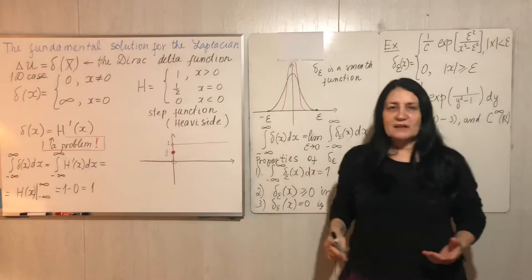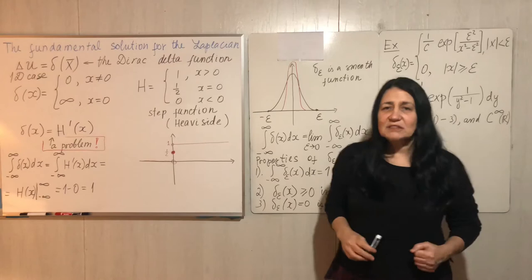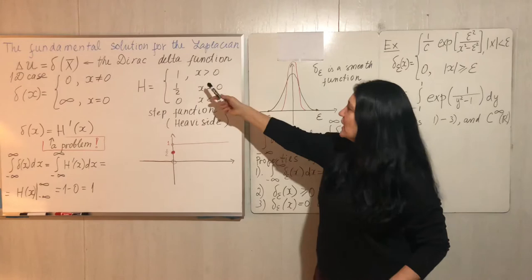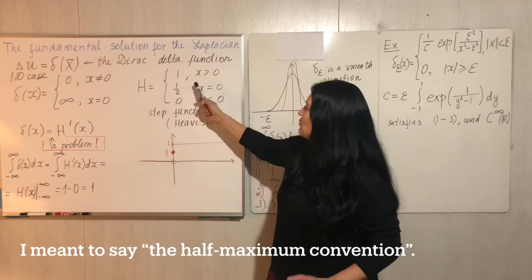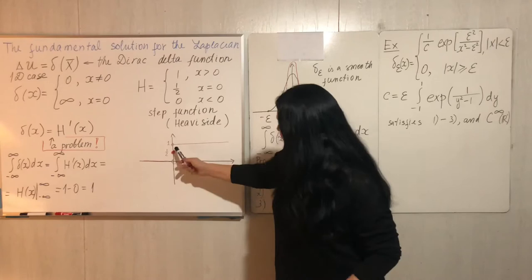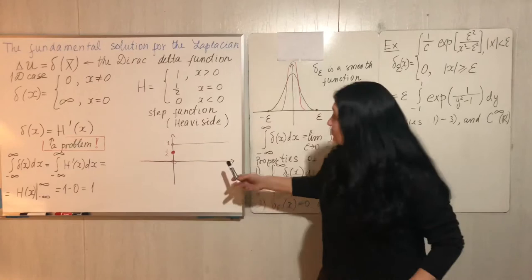Why did he define this function like that? Because he wanted the delta function to be the derivative of a step function, or Heaviside function. The Heaviside function equals 1 for the positive axis, equals 0 for the negative axis, and by the half-convention, equals 1/2 when x is 0. Here is the sketch: 1 for positive, 0 for negative.